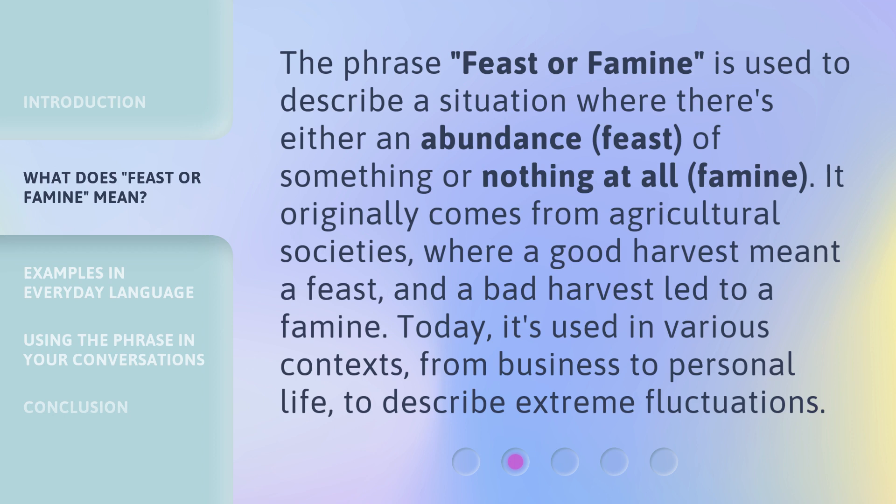The phrase 'Feast or Famine' is used to describe a situation where there's either an abundance — feast — of something, or nothing at all — famine. It originally comes from agricultural societies, where a good harvest meant a feast and a bad harvest led to a famine. Today, it's used in various contexts, from business to personal life, to describe extreme fluctuations.